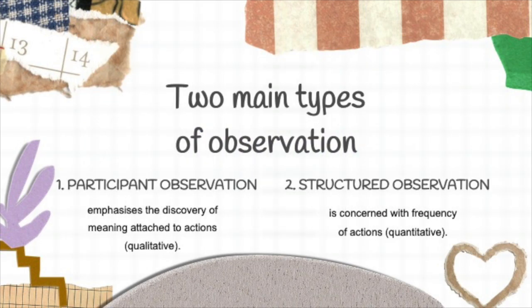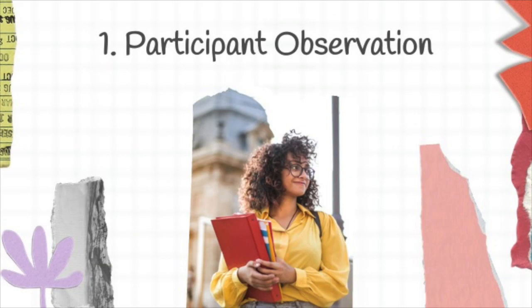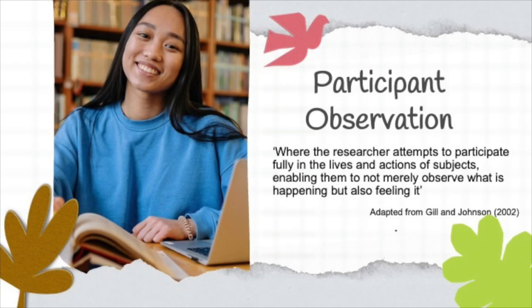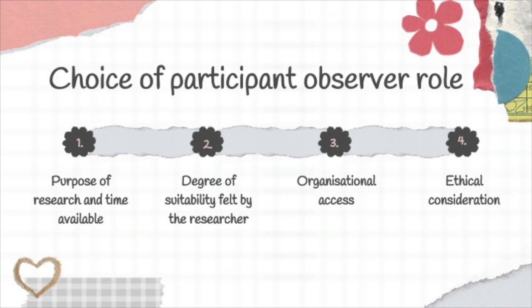There are two main types of observation: participant observation and structured observation. Participant observation is where the researcher attempts to participate fully in the lives and actions of subjects, enabling them to not merely observe what is happening but also feel it. Researchers choosing to conduct participant observation need to decide the right purpose of the research as well as the right time to observe. This method requires researchers to immerse themselves in the research setting and directly experience participation in the observation, activities, and social settings. Researchers need to ensure they can get full organisational access, which leads to many ethical considerations such as gaining full consent.